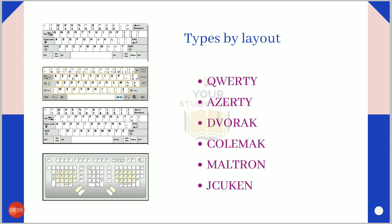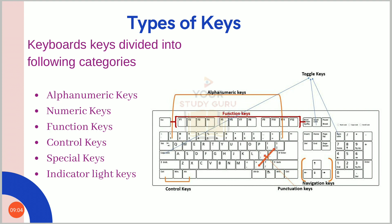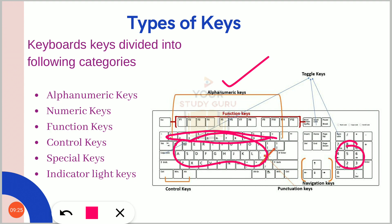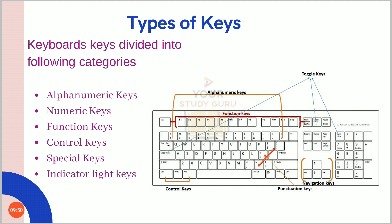Keyboard keys are divided into the following categories: alphanumeric keys (letters A–Z and digits), numeric keys, function keys, control keys, special keys including toggle keys such as Enter and Shift, and indicator light keys. Indicator light keys include Caps Lock, Num Lock, and Scroll Lock — when Caps Lock is on, you can see a green indicator light.